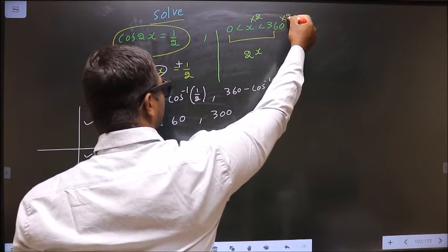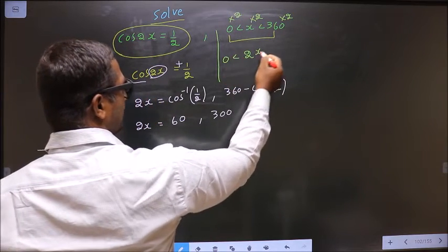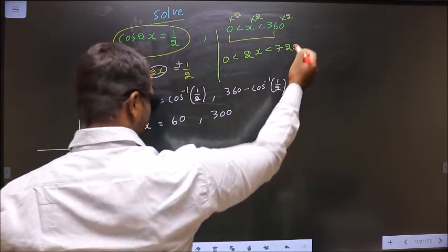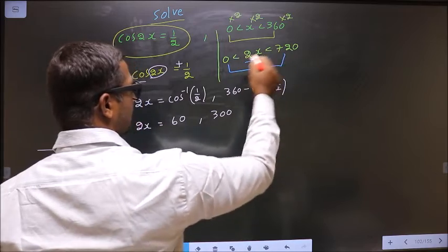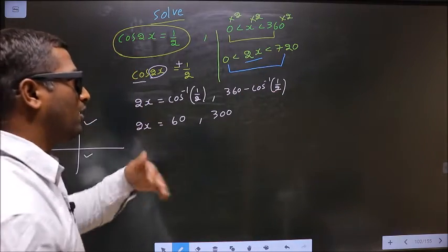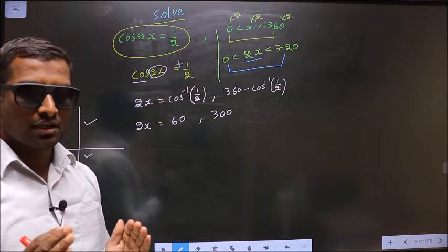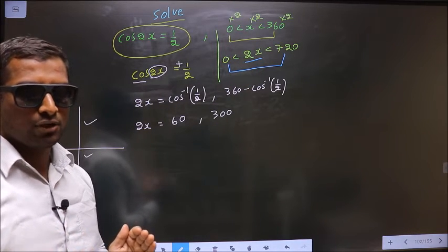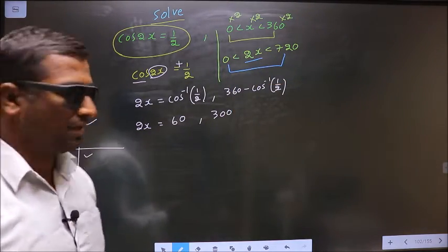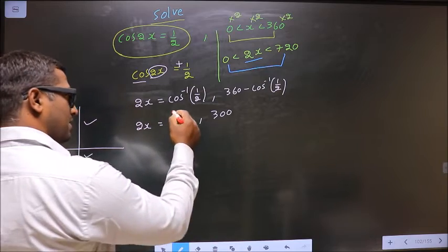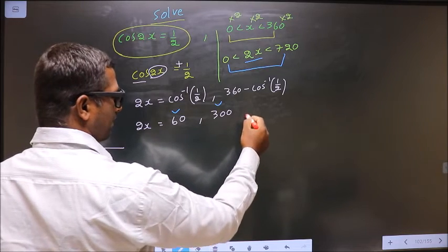We get 0 less than 2x less than 720. Whenever 2x angles lie in this interval, automatically x will lie in the original interval. We should write all the values for 2x lying in this interval. Both 60 and 300 lie in this interval.